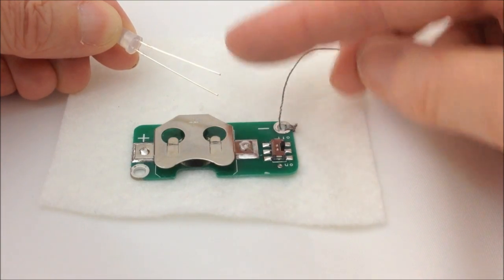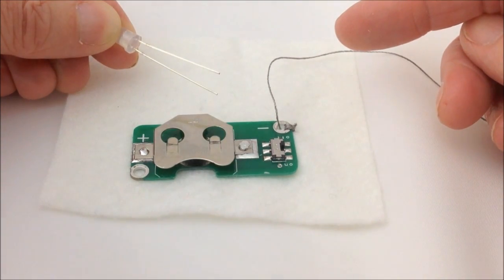So the shorter leg and the flat piece on the side will indicate to you that that is the negative leg.